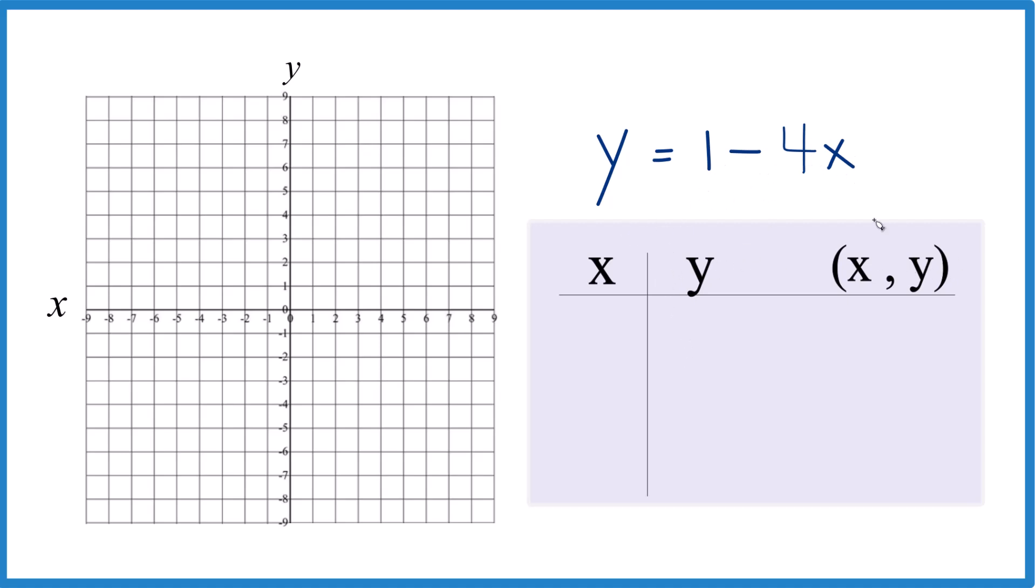So I'll put a value in for x, find y, and we'll graph that point. So let's put in, you can choose anything. I'll start with 0. That's usually pretty good because 1 minus 4 times 0. 4 times 0, that would just be 0. So it's just 1 minus 0. That gives us 1.